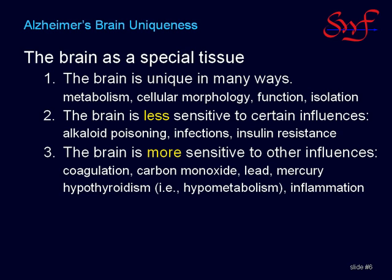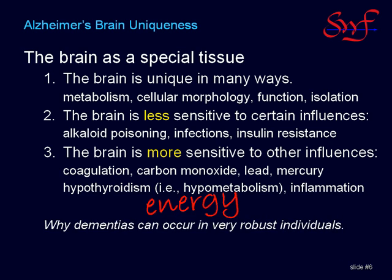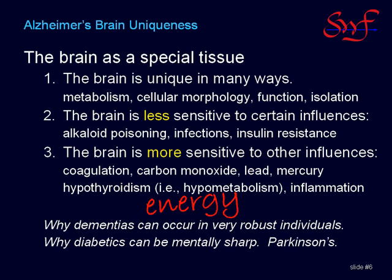These sensitivities of the brain all cause impairment of energy utilization by the brain. Energy is the key — we will come back to this central point many times. The special sensitivities and insensitivities of the brain mean that body pathologies are not necessarily associated with brain pathologies. There are many demented people who are otherwise quite robust, and conditions of extreme physical disability in which mental acuity is minimally affected. Even within the brain, sensitivities can be selective: in Parkinson's disease, the parts dealing with motor functions and motivational tone are selectively affected, while cognitive function may not be noticeably impaired at all.